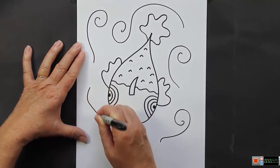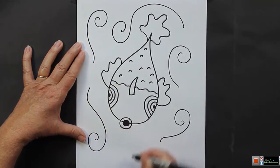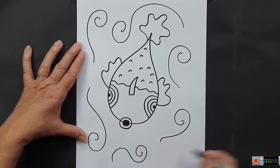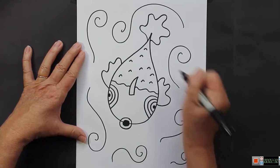Some squiggly lines and some curly cues. And then also what you can do is you can make some circles that represent bubbles.